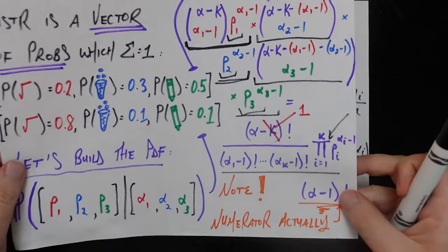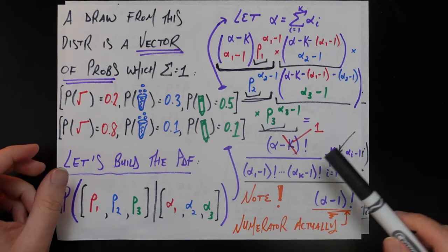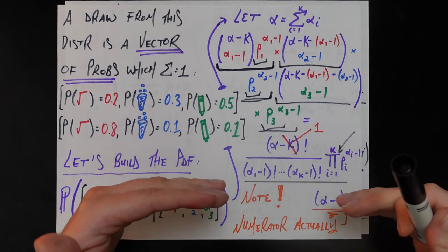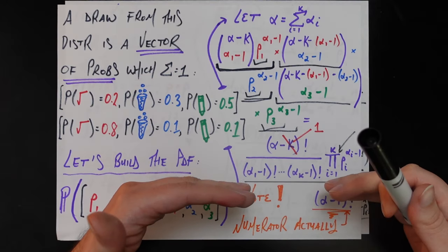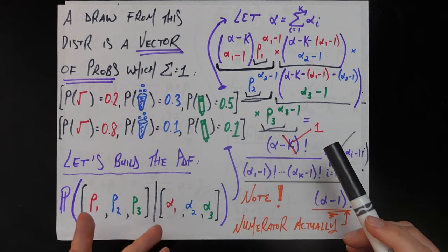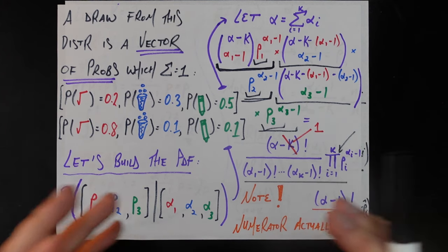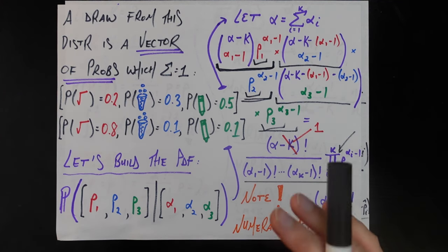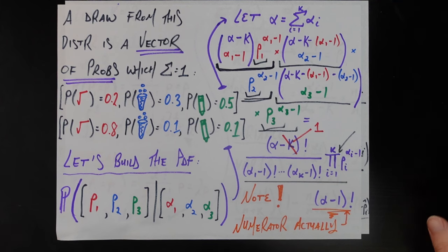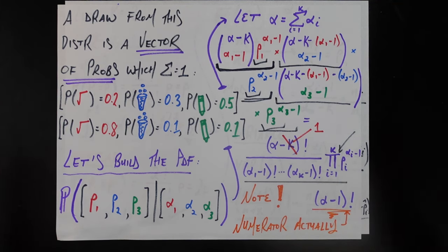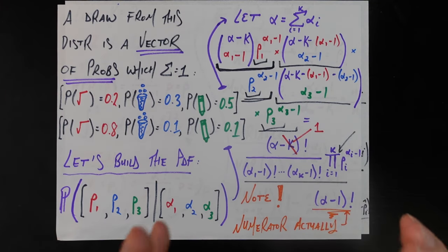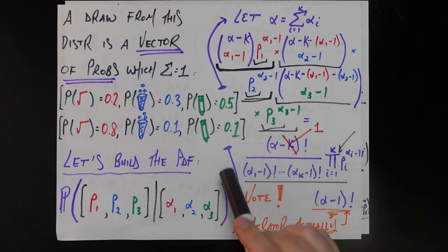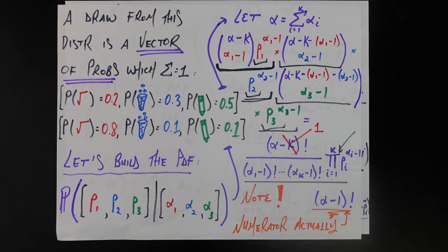I went through all that to hopefully somewhat justify why, even though all our intuition was correct in building up the formula, we need to make a minor adjustment to the numerator so that the whole thing integrates to one. There are more theoretical reasons why this is true, but this is a good balance between just saying it's true magically and a full derivation which would take a really long time. So this is the full form of the probability density function of a Dirichlet distribution, and this is the logic we used to build it up.